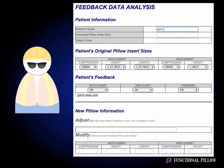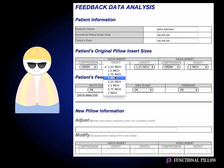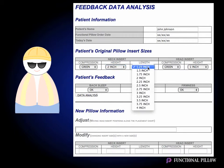First, we'll enter his name and the Functional Pillow Order Date. Then we'll write today's date. Next, we'll select his original pillow insert sizes. John's neck insert compression was green, height was 2 inches, and the length was 3.25 inches.